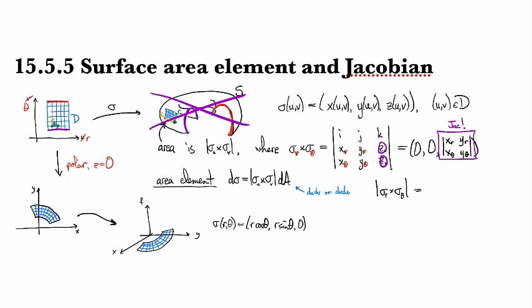So if we look at the magnitude of this guy right here, we're going to have the square root of zero squared plus zero squared plus this thing squared. And so that's just going to give us exactly the absolute value of the determinant. I know this is terrible. X_R, Y_R, X_theta, Y_theta.